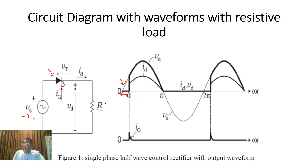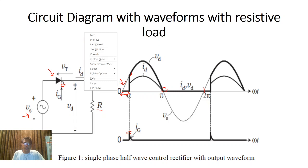It will switch from forward blocking mode to forward conduction mode, and then there is a complete connection from input to output. If we consider this thyristor as an ideal switch, whatever supply voltage is coming will appear as output. At omega-t equal to pi, there is a natural commutation — the thyristor turns off because after pi there is a negative supply from the input. For a resistive load, the current is simply voltage divided by resistance. The gate pulse is given at the gate terminal of this thyristor.